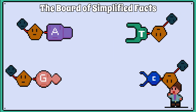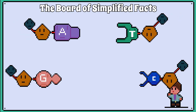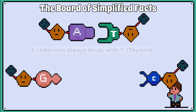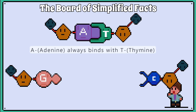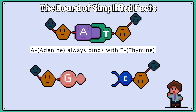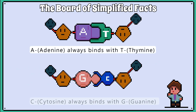Everyone must learn that there are rules on how these base pairs pair up. Adenine always binds with thymine, and cytosine always binds with guanine.